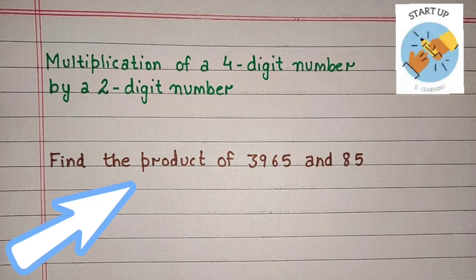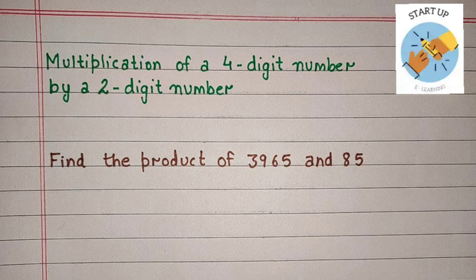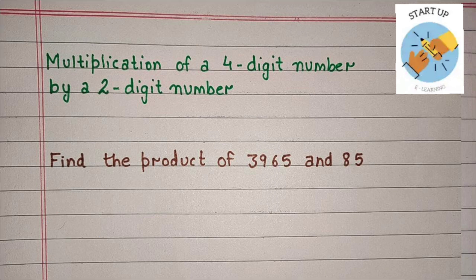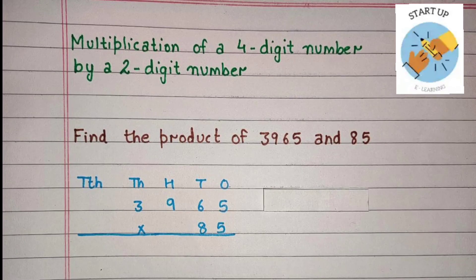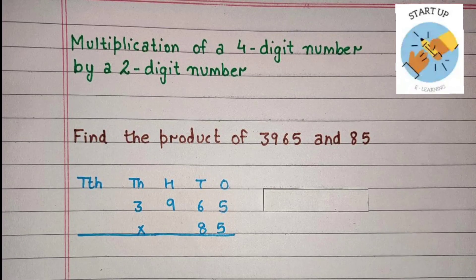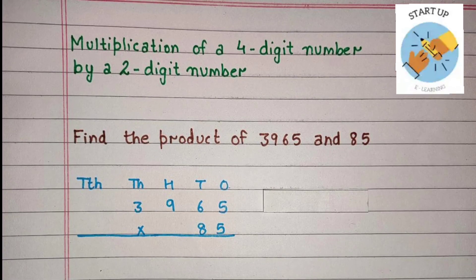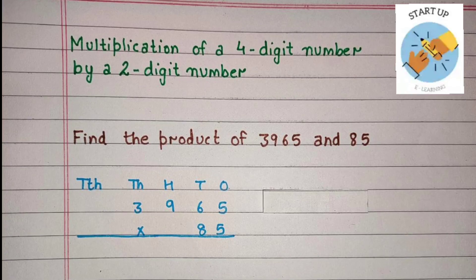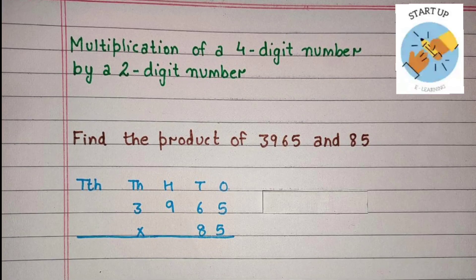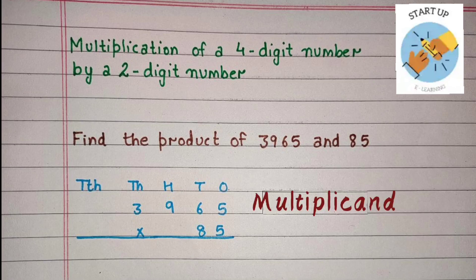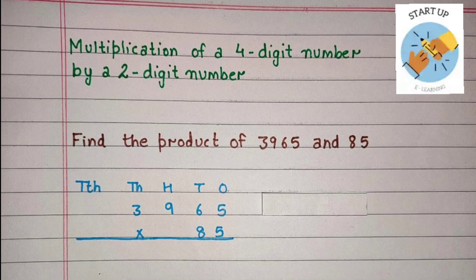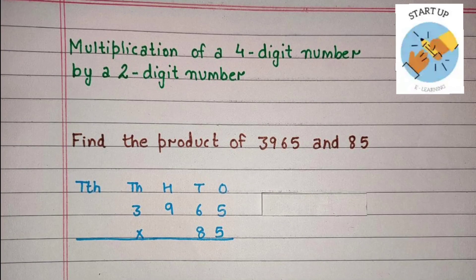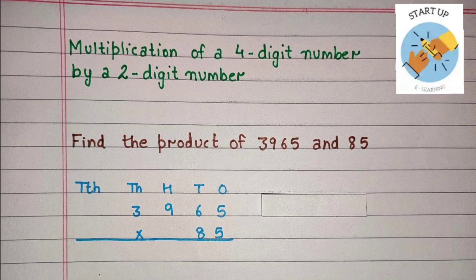Find the product of 3,965 and 85. Let's arrange these numbers according to their places. For 3,965: 5 will be written under the 1's place, 6 under the 10's place, 9 under the 100's place, and 3 under the 1000's place. 3,965 is the multiplicand. 85 is the multiplier, so 5 will be written under the 1's place and 8 under the 10's place.